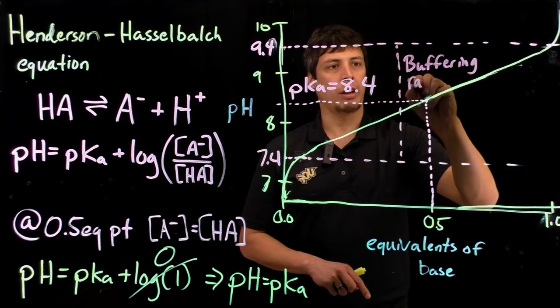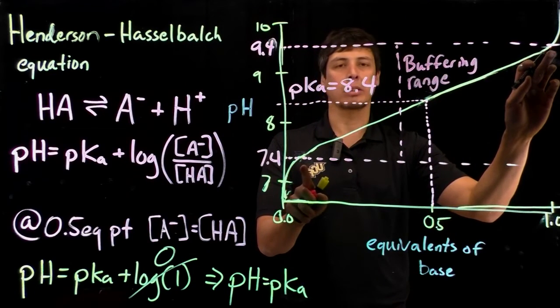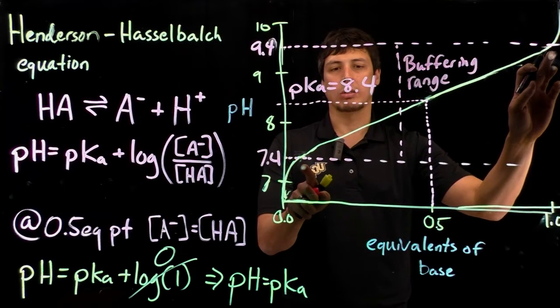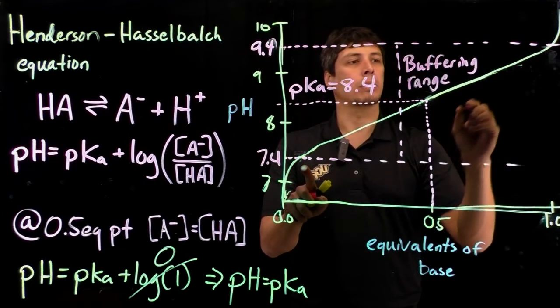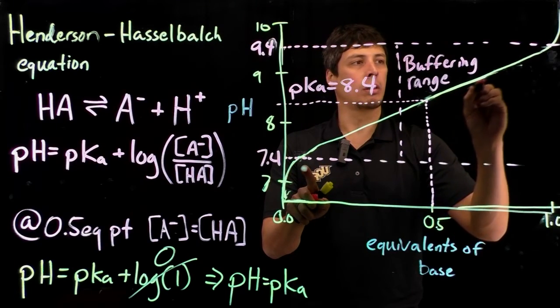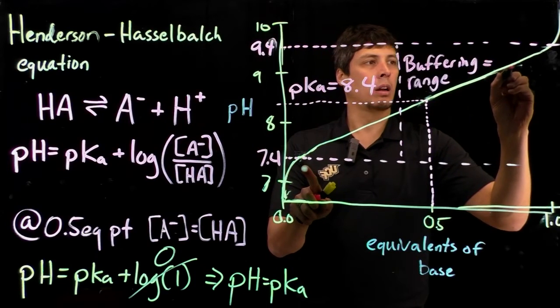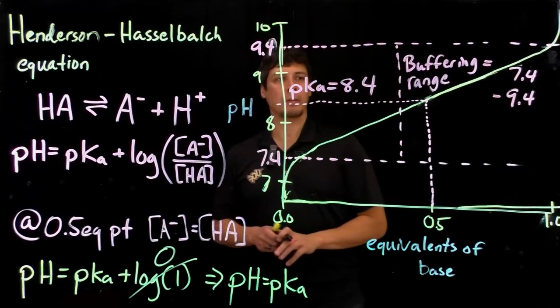To identify this on a titration curve, we're looking for the plateaus or the flatter or the very slowly increasing parts of the titration curve. The buffering range in this case ranges from 7.4 to 9.4, so plus or minus 1 pKa.